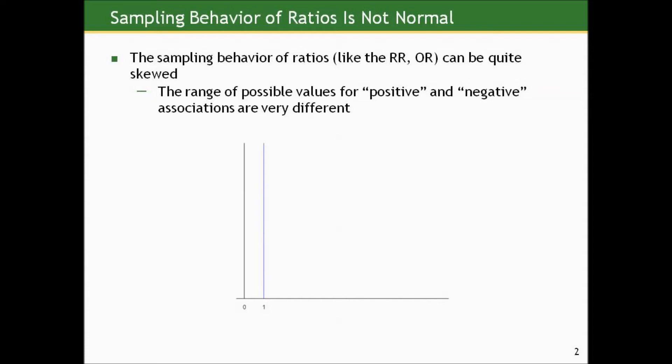Whereas if the opposite is true, the group on top has a higher risk than the group on the bottom, that can result in relative risk anywhere from 1 to positive infinity. So you can see there's an imbalance here in the range of possibilities for positive and negative associations. So when you look at the sampling behavior, there's a lot more room for variability on the right side of 1 than on the left side, just by the numerical constraints on these measures.